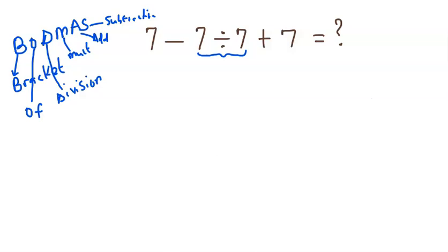We know 7 divided by 7 is 1, so this expression will become 7 minus 1 plus 7. Now what do we have next?